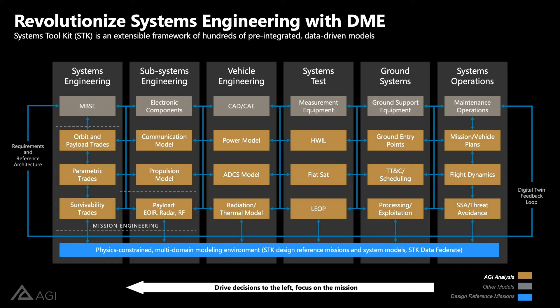The promise of digital mission engineering is that when I integrate those models, a parametric trade — optimizing against orbital altitude or inclination — can ripple through my other models. I can instantly verify that the design reference mission can still meet my link budget requirement as the communications model is designed, and get instant model-based verification of my requirements without having to manually redo all that analysis.